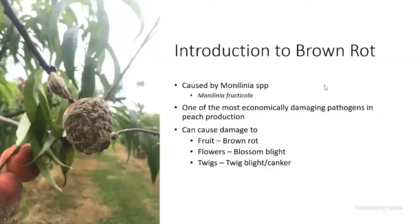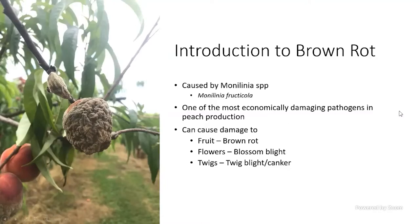Brown rot is caused by Monilinia species — most commonly here in the southeast it's Monilinia fructicola. It's one of the most economically damaging pathogens in peach production, and one of the reasons for that is because it's essentially a threat to the peach all the way from bloom to harvest.